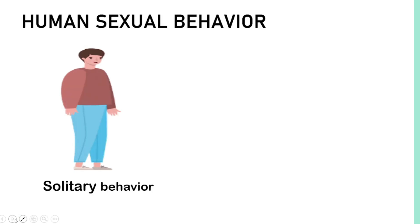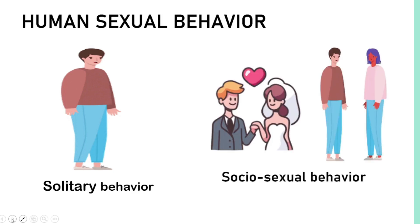What is human sexual behavior? It is defined as any activity — solitary, between two persons, or in a group — that induces or brings sexual arousal. This behavior is classified according to gender and number of participants.